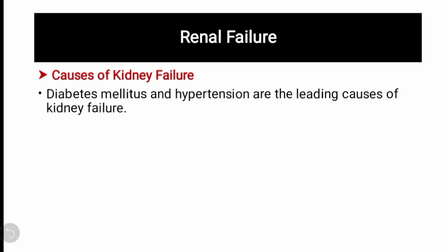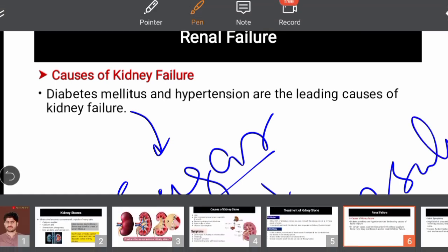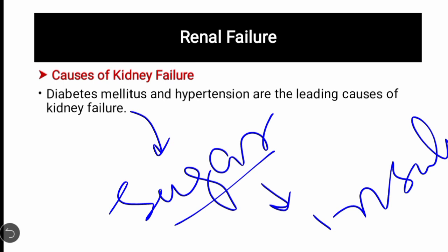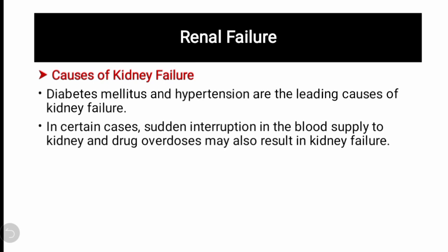Diabetes mellitus میں blood میں sugar کی concentration high ہو جاتی ہے کیونکہ insulin — جو ایک hormone ہے — absent ہوتا ہے۔ اس کے علاوہ hypertension بھی kidney failure کی وجہ بنتی ہے۔ Diabetes اور hypertension کی وجہ سے، خاص طور پر kidney stones کے ساتھ مل کر، kidney آہستہ آہستہ کام کرنا چھوڑ دیتی ہے۔ بعض اوقات kidney کو blood supply نہ ہونے کی وجہ سے بھی kidney کام کرنا چھوڑ دیتی ہے۔